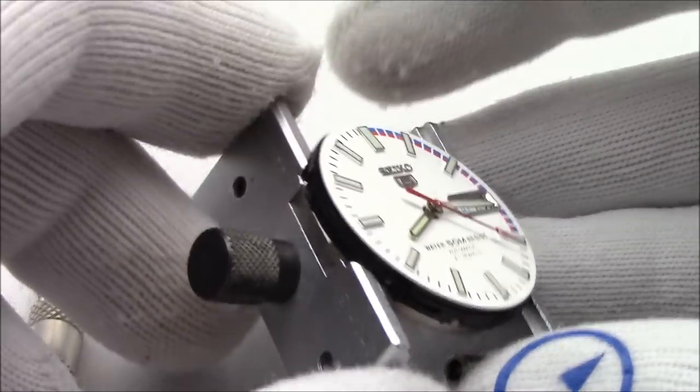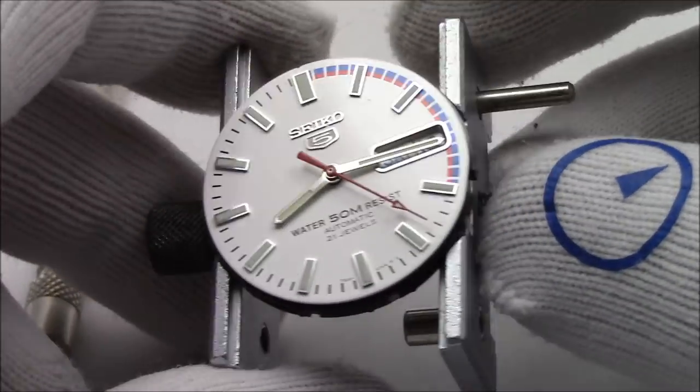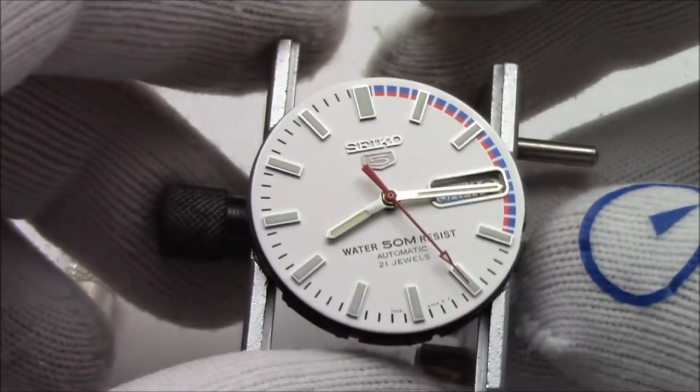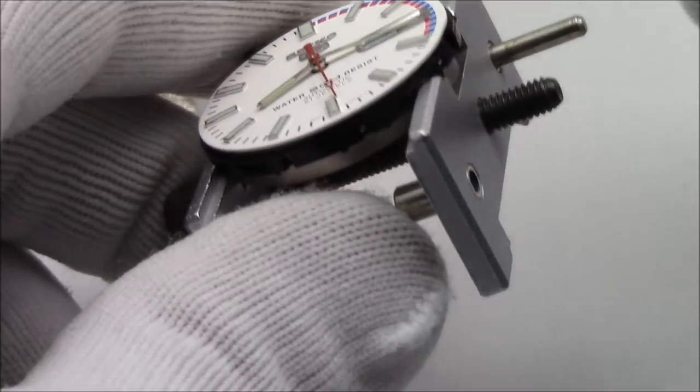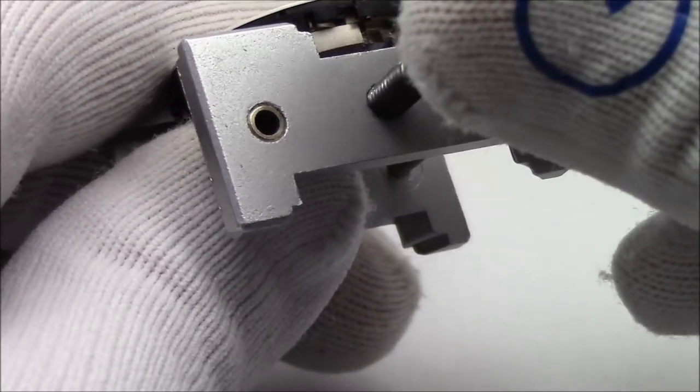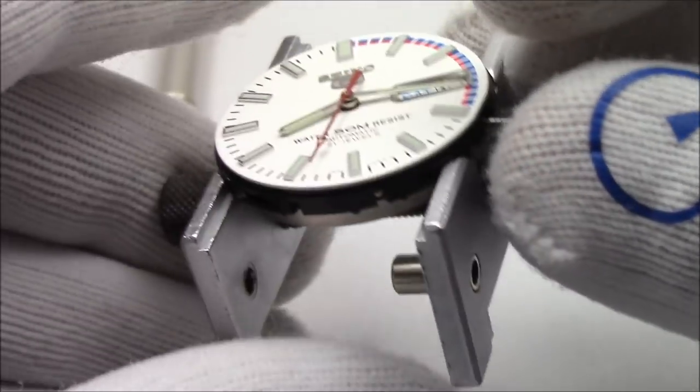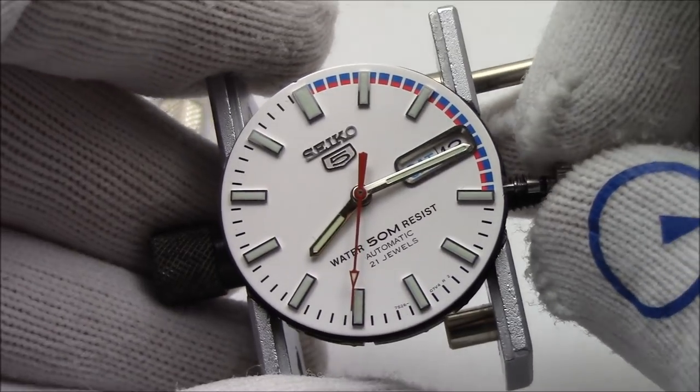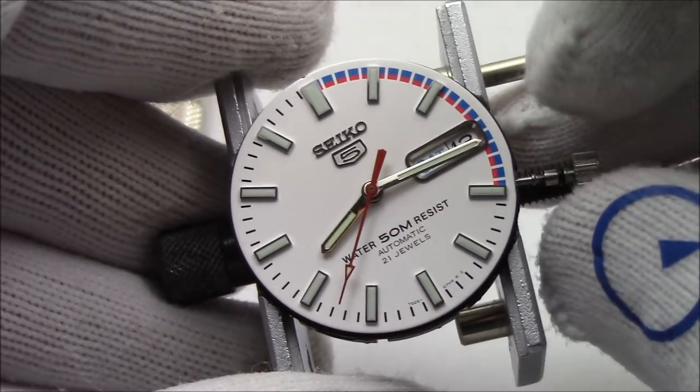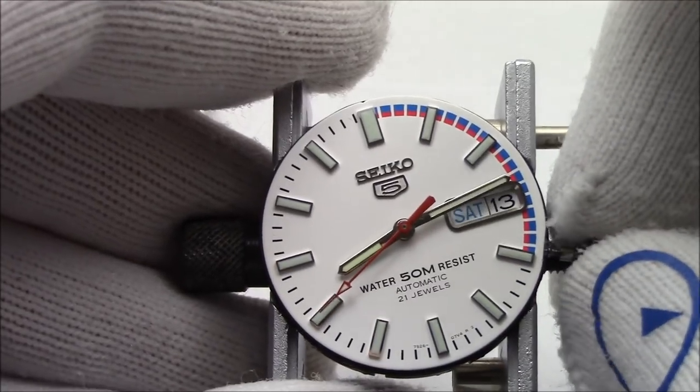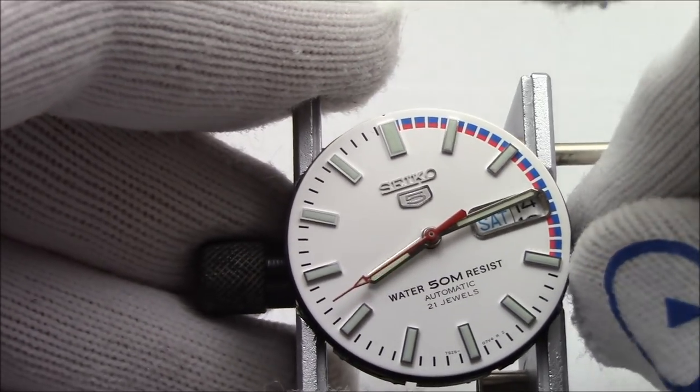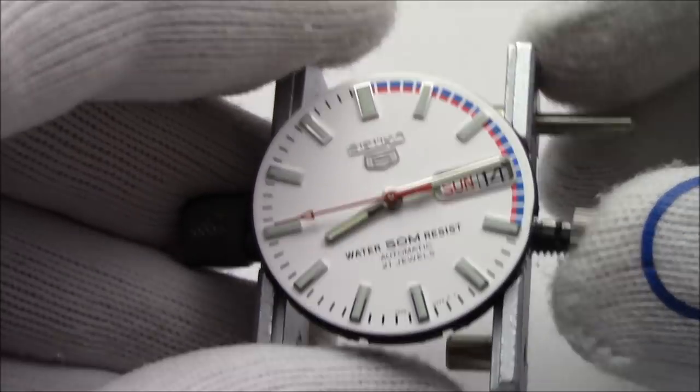So now that the movement is in this holder here, so it's easier for me to handle, I'm actually going to pop the crown back in, and then we'll remove the dial and the hands. Popping the crown in, it's got to find where it goes. And you just got to be a little bit easy with it, and you don't force it, and it'll eventually go. And there it is. I can pull it out two clicks, set the time, one click, day and date, and that's it.